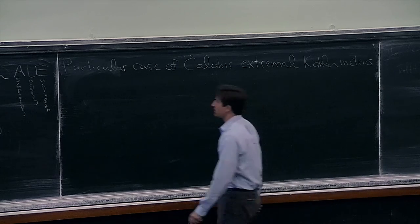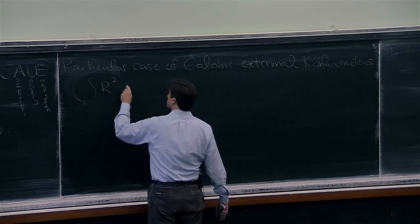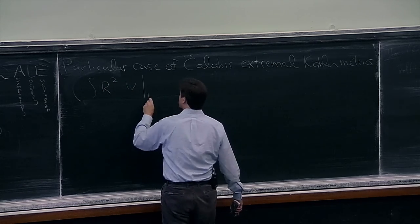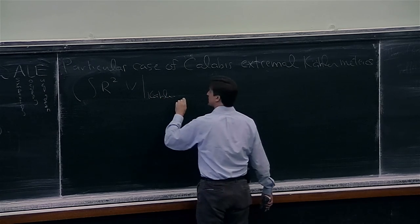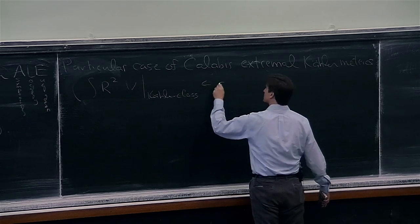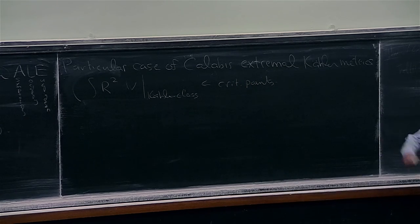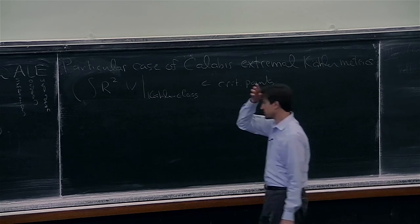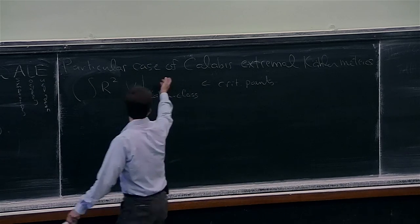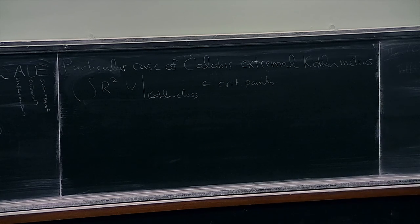Calabi studied the functional — the integral of scalar curvature squared — restricted to a given Kähler class. Critical points of this are known as extremal Kähler metrics, introduced by Calabi. They're very important in Kähler geometry. Kähler-Einstein metrics are necessarily extremal Kähler metrics, so this is a generalization of the Kähler-Einstein condition.